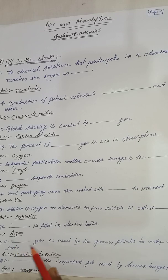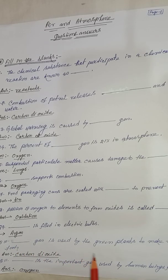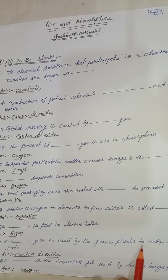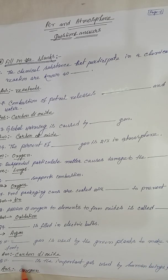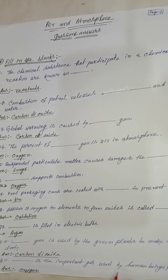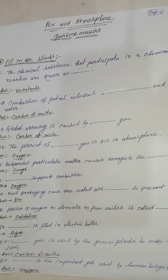The gas used by green plants to make their food is carbon dioxide. Oxygen is the important gas used by human beings for breathing.